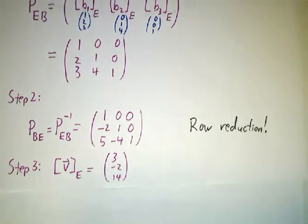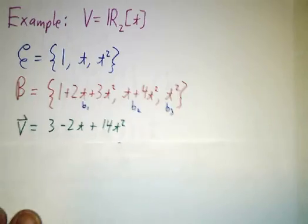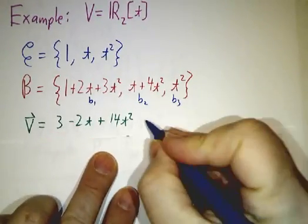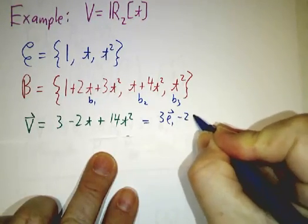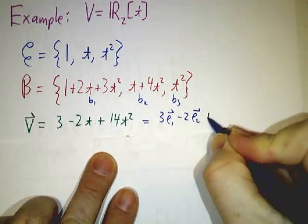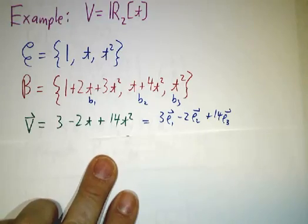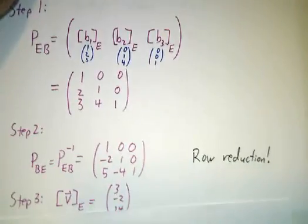Next step, we want to figure out what is V in the E basis. Well, V was 3 minus 2t plus 14t squared. In other words, it's 3 times the first basis element, minus 2 times the second basis element, plus 14 times the third basis element. So its coordinates are 3, negative 2, 14. Yay.